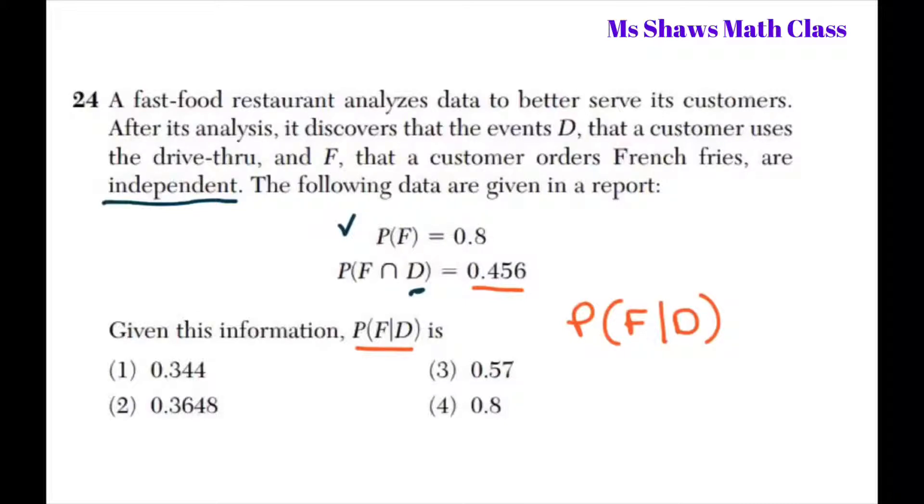But in this case, since F and D are independent, knowledge about either one does not give information about the other.